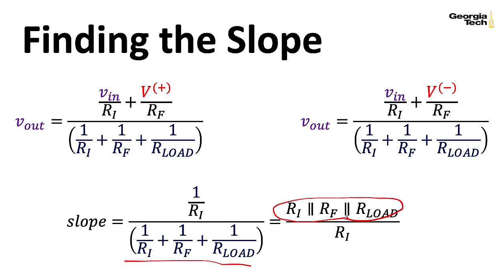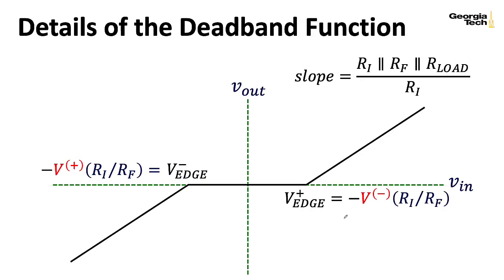and you could write that in terms of one over resistances in the denominator, or you could write that slope in terms of having a bunch of parallel resistances in the numerator, whatever you think is easier to interpret. So here we see how the various resistance values and the voltage limits of the output of the op amp define both the edges of the deadband and the slope of the lines that come out of that deadband.